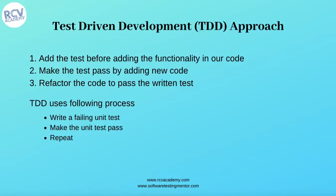TDD uses the following process: you write a failing unit test, you make the unit test pass, and then repeat the whole process. The test cases are defined as unit tests before actual development starts and will be failing tests initially. Once the developer starts coding, those unit tests begin passing. If there are still failing tests after execution, the developer repeats the refactor process until all TDD test cases are passed.